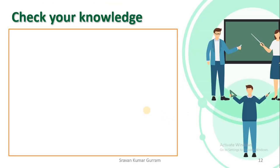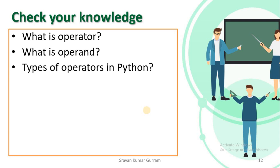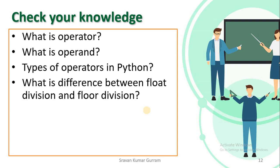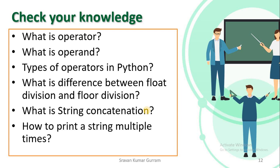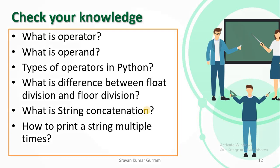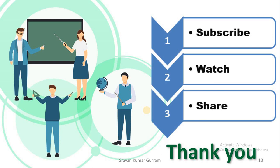Now check what you have learnt from this video. Pause and try to answer: what is operator, what is operand, types of operators in Python, what is the difference between float division and floor division operators, what is string concatenation, and how to print a string multiple times. If this video is useful to you, please subscribe to the channel, watch and share it. Thank you.